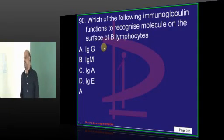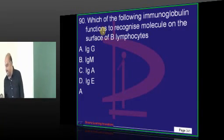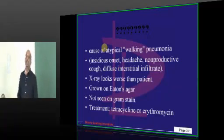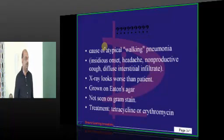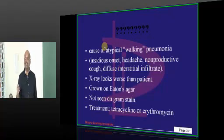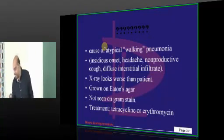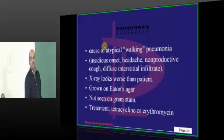The surface of B-lymphocytes — how can you identify? It is the immunoglobulin on the surface that helps you identify. Doctor, which is the organism responsible for atypical walking pneumonia? A happy man walking with a crying X-ray. The answer uniformly from everybody is Mycoplasma.